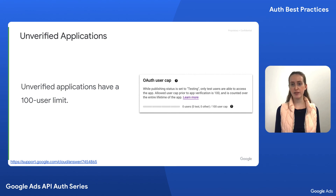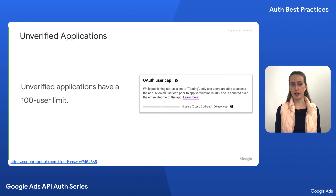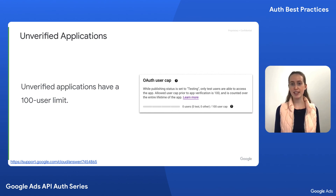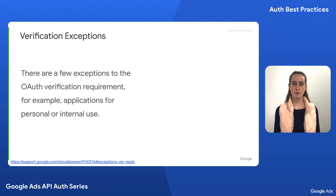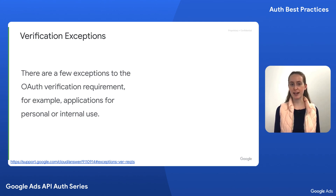If you choose not to verify your application, it will display the unverified app screen when requesting permissions and face a cap of 100 total users who can grant permission. This user cap is displayed in the OAuth consent screen page within the APIs and Services section of your GCP project. There are some exceptions — for example, if your app is for personal use, used by internal users and marked as internal in the Cloud Console, or for testing and development purposes. However, test apps are still subject to the unverified app screen and the 100-user cap. As a general rule, it's best to verify any and all production apps.